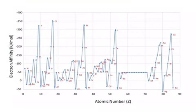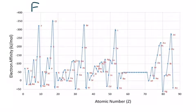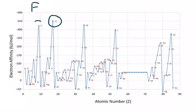Now I'm going to show you something very unique. The most electronegative element is fluorine — its value according to Linus Pauling is 4.0. However, if you look at this chart, you're going to notice that fluorine is not the element that has the highest electron affinity. It might have the highest electronegativity, but it does not have the highest electron affinity. That honor goes to chlorine. Compare the electron affinity value of chlorine with fluorine.